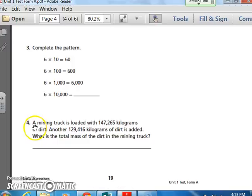Number four. A mining truck is loaded with 147,265 kilograms of dirt. Another 129,416 kilograms of dirt is added. What is the total mass of the dirt in the mining truck? Now you're probably asking yourself, what is this word mass? Well, that's really the weight of it. Mass is how much matter, and you learn that probably in science, I hope. So do you need to draw a picture? Do you need to circle something or underline it? I'm going to read it again. A mining truck is loaded with 147,265 kilograms of dirt. Another 129,416 kilograms of dirt is added. What is the total mass of the dirt in the mining truck? Now pause and figure out your answer. Make sure you also have labels. I'll give you a hint. Your answer should be mass for this word. How much mass? So you can put your word mass there.